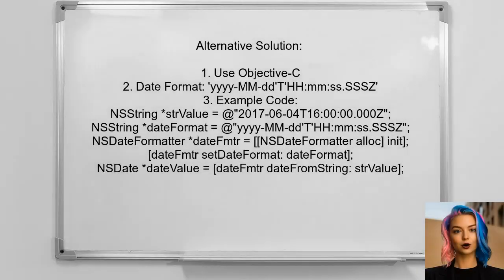An alternative solution provided by another user involves using Objective-C to format the date string. They suggest using the date format yyyy-MM-dd'T'HH:mm:ss.SSSZ for the string 2017-06-04T16:00:00.000Z. This will successfully create an NSDate object.